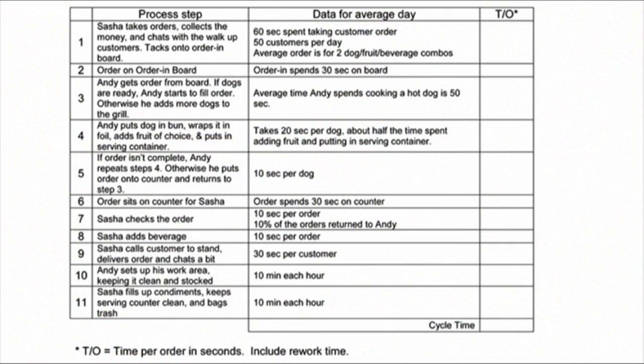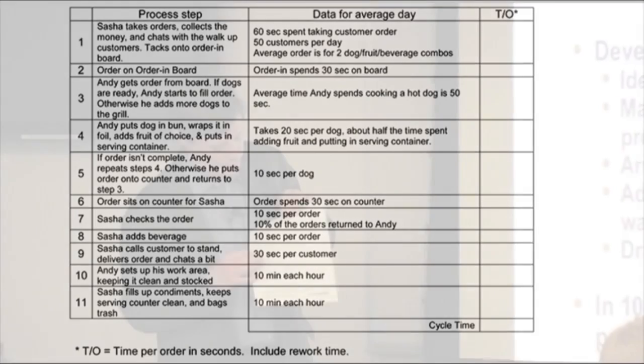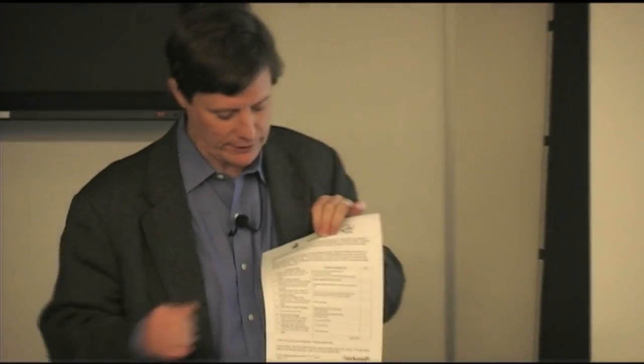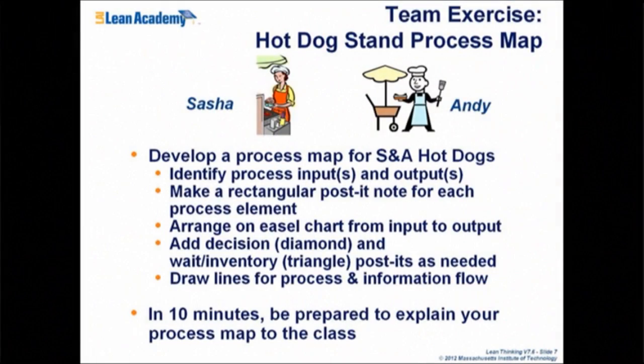Read the sheet. Their process has actually already been broken down. If you were doing this with your own process from scratch, you'd have to figure out what the steps are and what the inputs and outputs to the steps are. Don't even worry about the data yet — just the first column, which is the steps they take. That's been done for you, and we're going to map this.